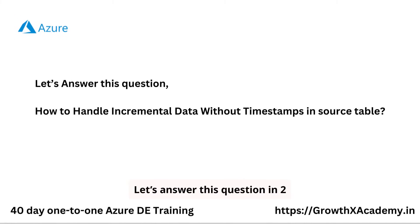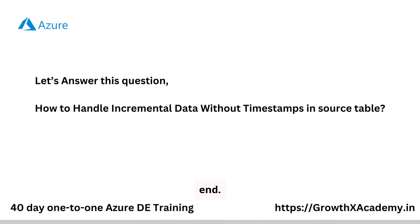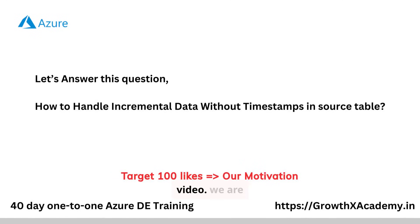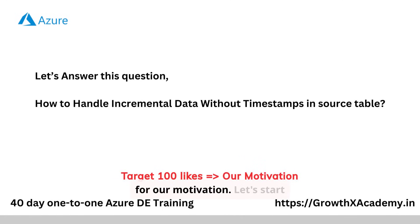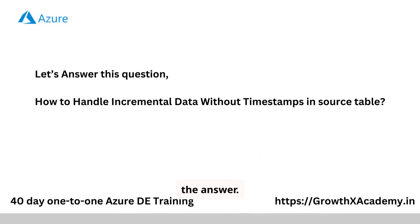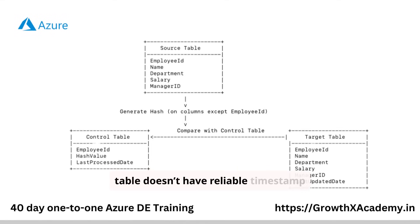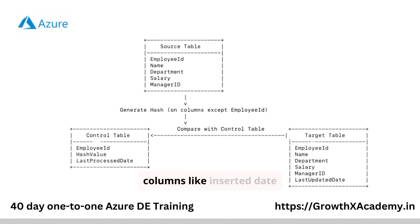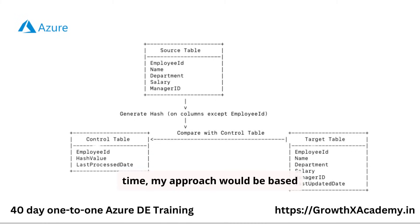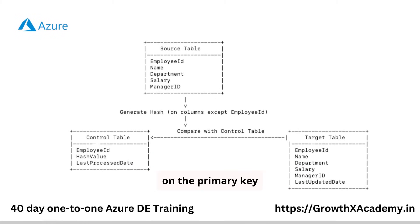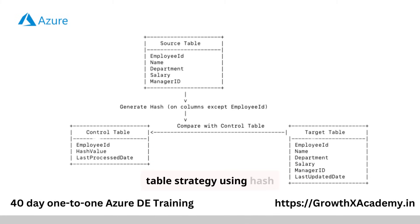Let's answer this question in two minutes. So in cases where the source table doesn't have reliable timestamp columns like inserted date or updated date time, my approach would be based on the primary key values combined with a control table strategy using hash values.